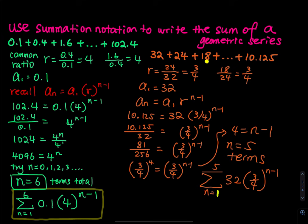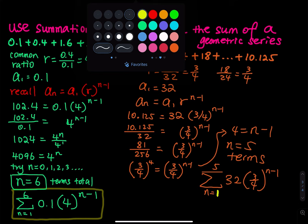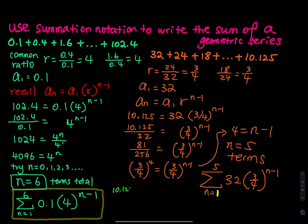For that math, you take 10.125 and divide it by 32. You should get 0-point-something. Then hit the math key, and the very first item in that menu is FRAC, which converts a decimal back to a fraction. That is extremely convenient in this problem. This is the end of this problem.